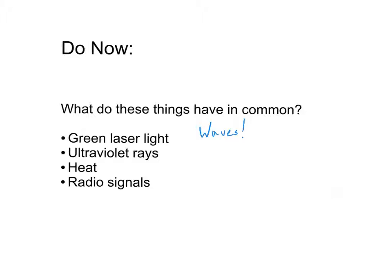If you want to be even more precise, these are a specific type of wave. These are all examples of electromagnetic waves. So what makes a wave electromagnetic, and what are the characteristics of electromagnetic waves? That's what we're going to talk about in this video.